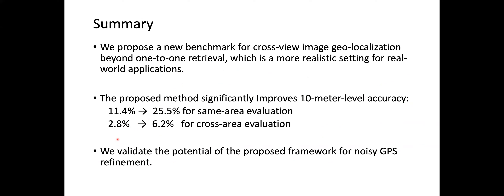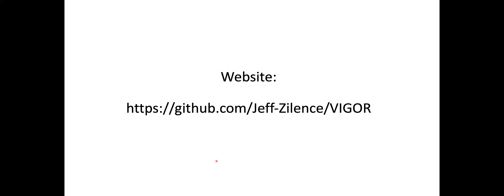To summarize, in this work we propose a new benchmark for cross-view image geolocalization beyond the one-to-one retrieval, which is a more realistic setting for real-world applications. The proposed method significantly improves 10-meter level accuracy, boosting performance from 11.4% to 25.5% for same-area evaluation and from 2.8% to 6.2% for cross-area evaluation. We also validate the potential of the framework for noisy GPS refinement, with applications to assistive navigation. Our dataset and code are publicly available.